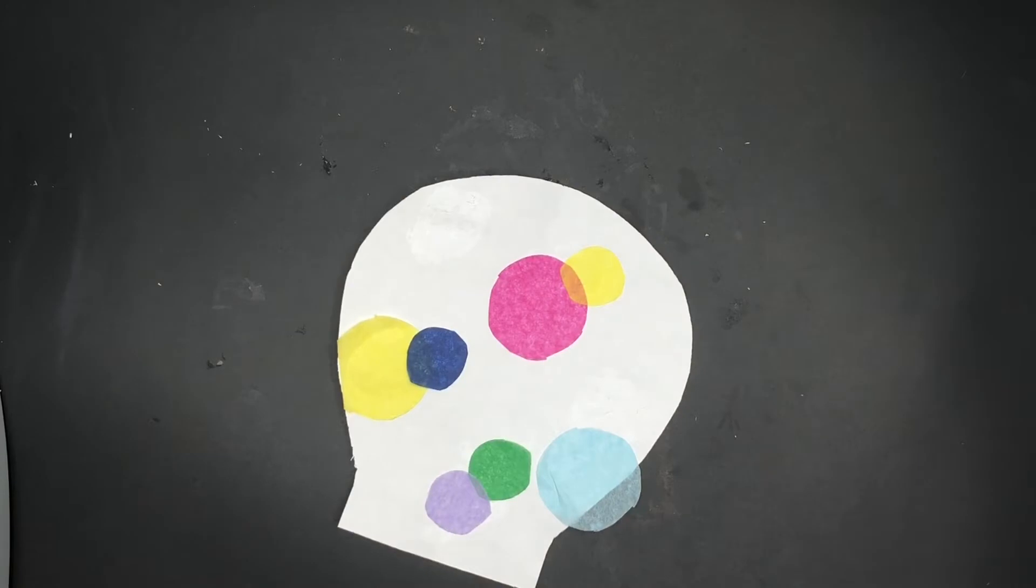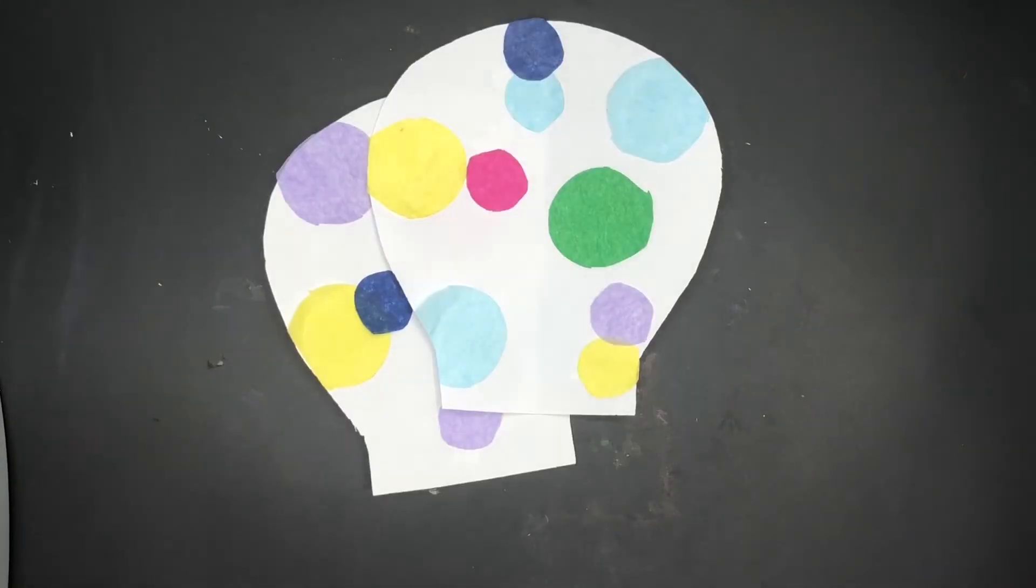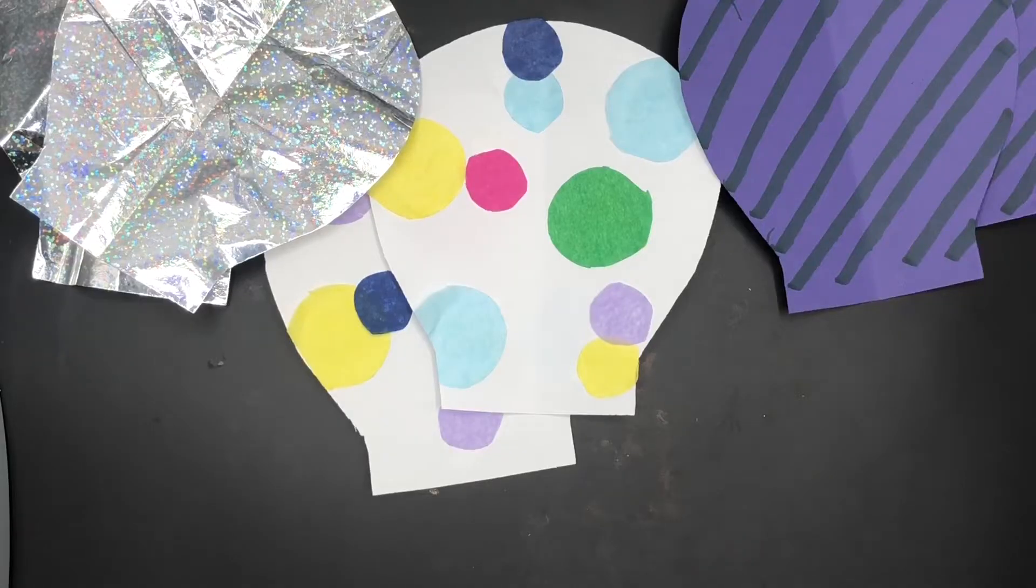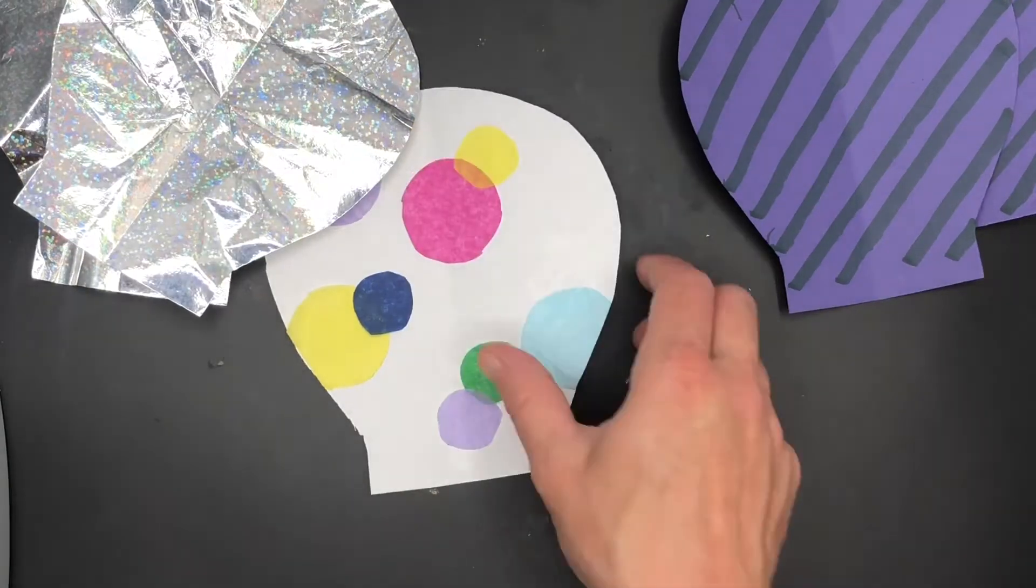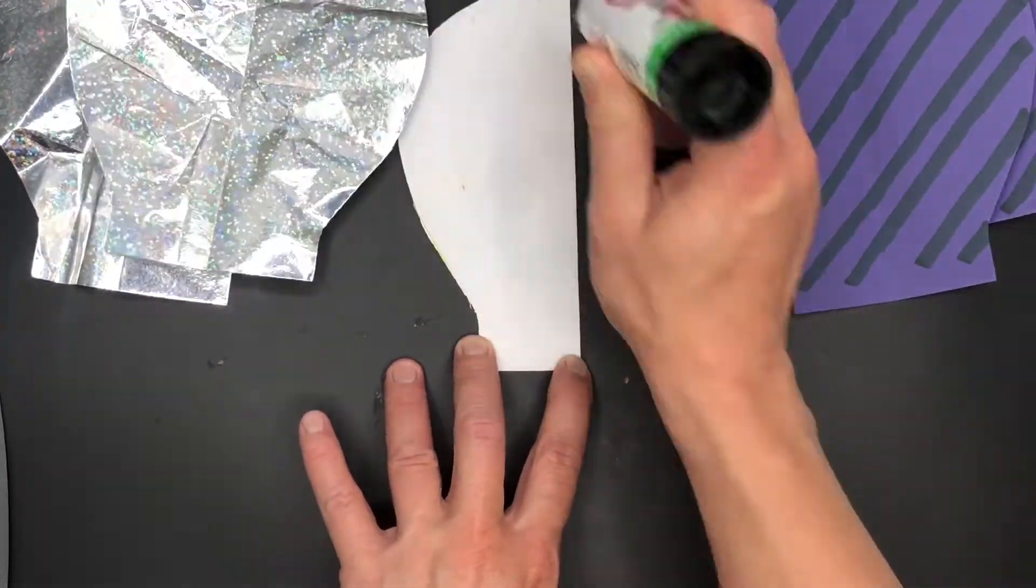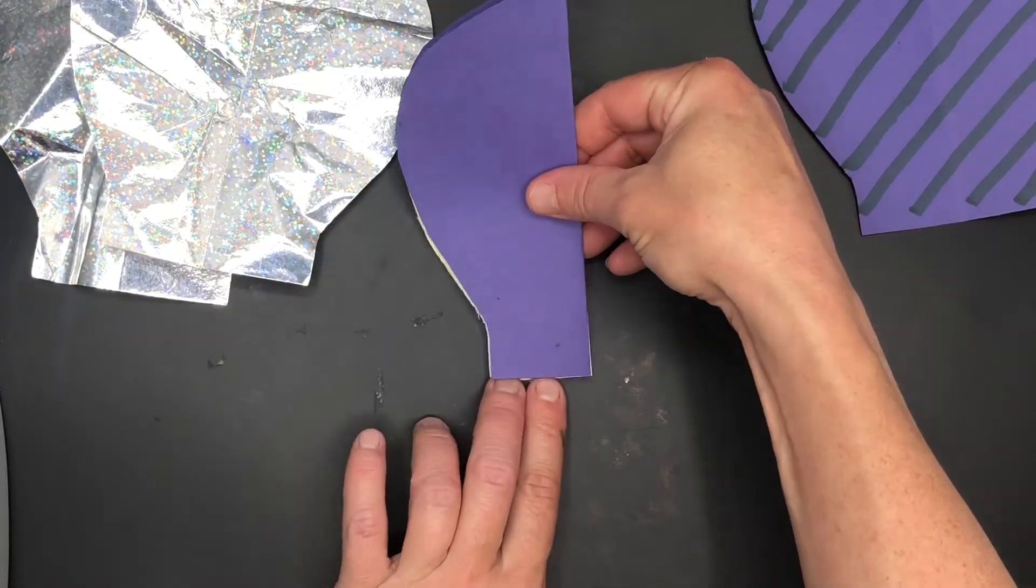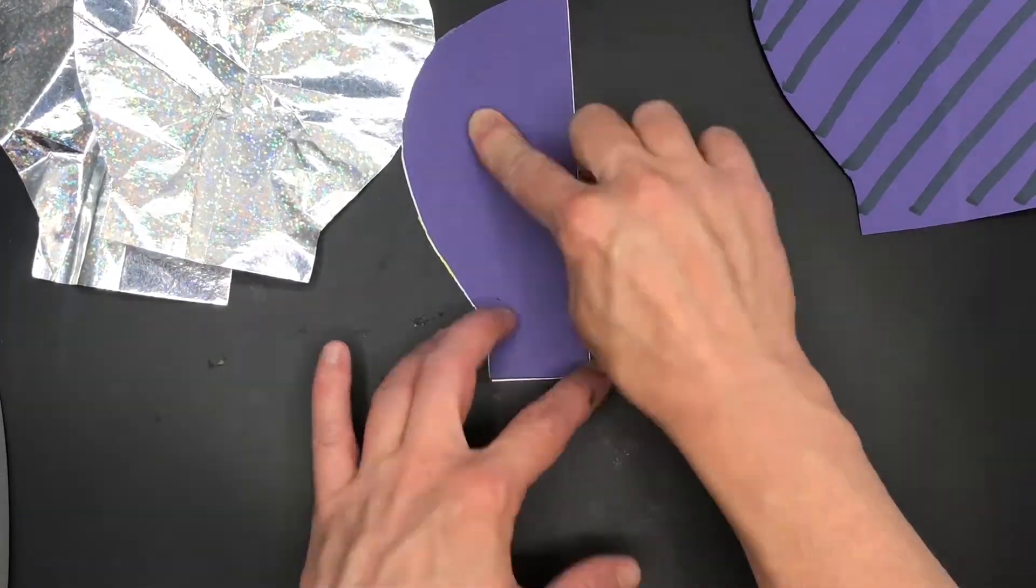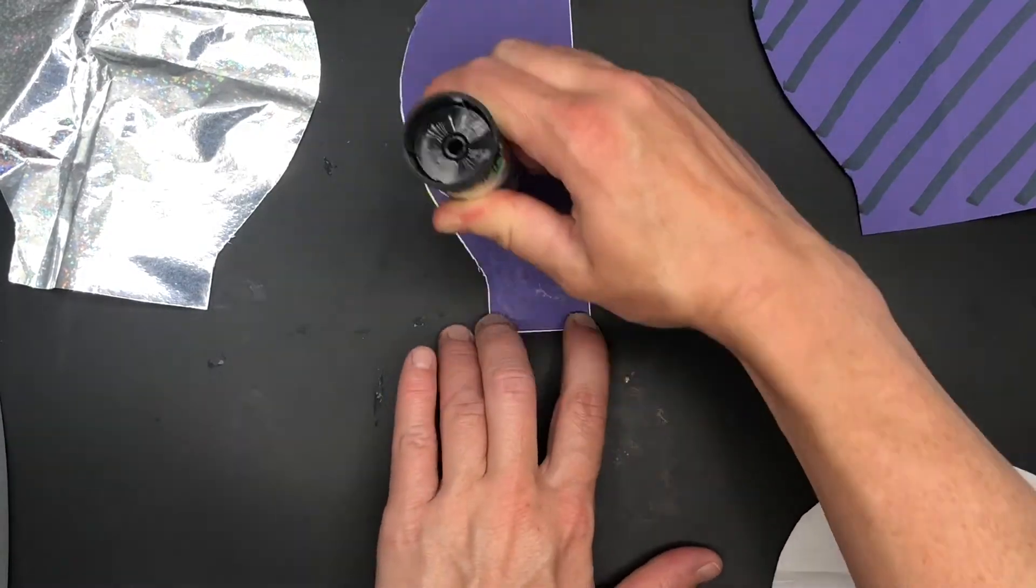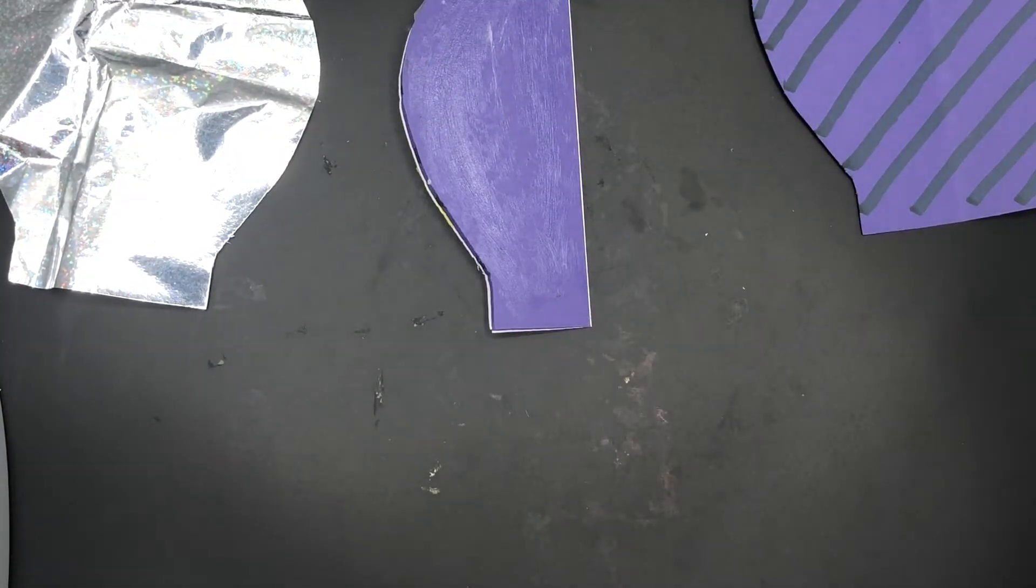Once you've decorated all of your six balloon shapes then we need to think about attaching them together. Take a balloon shape fold it in half and cover that half with glue then place another one of your balloon shapes on top and cover that with glue and then there's another balloon shape on top so you should have a kind of corrugated effect.